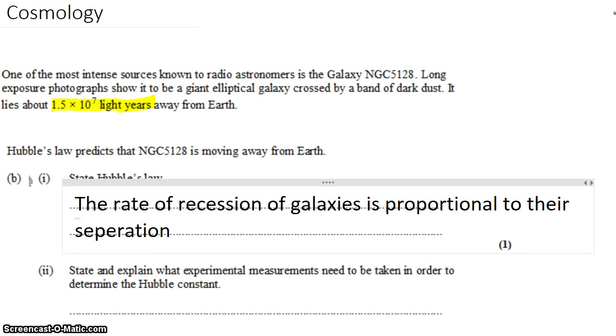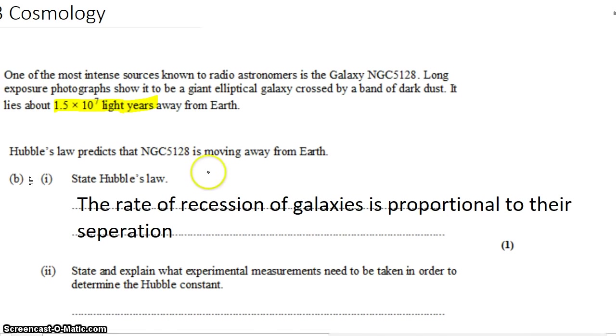There is an equation for this that you could use to help you make this statement of Hubble's Law. You can say that velocity is equal to Hubble's constant times the separation between galaxies. Just make sure to define those terms.